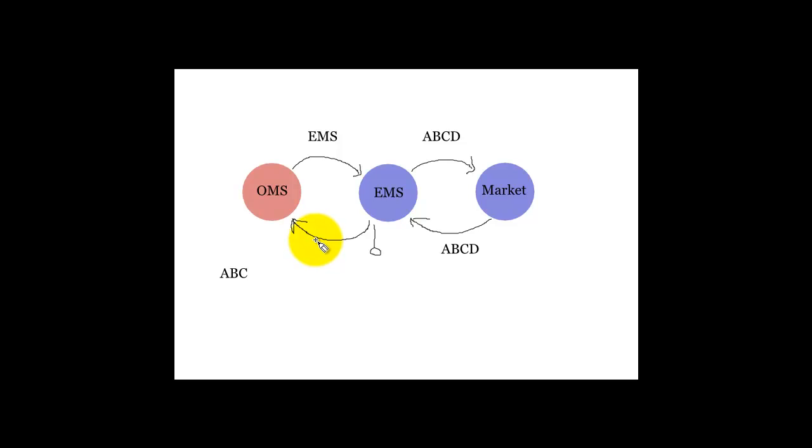If your system can handle it, create a table inside your actual FIX engine that's going to take whatever comes in from the EMS system via FIX, which is ABCD, and translate it to whatever broker code you want to see in your order management system.